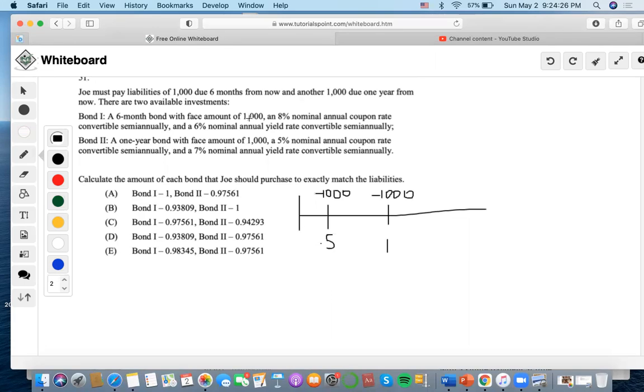There are two available investments: a six-month bond and a one-year bond. We need to calculate the amount of each bond that Joe should purchase to exactly match the liabilities. With immunization and exact matching problems, we always start with the bond that has the longest duration, then work backwards to fund the liabilities.